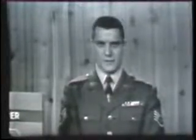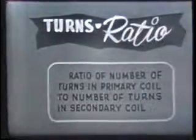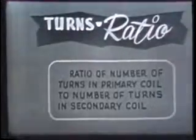The transformer can step a voltage up or it can step it down. The voltage increase or decrease is determined by the turns ratio of the particular transformer. The turns ratio is the ratio of the number of turns in the primary coil to the number of turns in the secondary coil. For example, if the primary coil has 500 turns and the secondary 1,000 turns — twice the number of the primary, or a ratio of 1 to 2 — the ratio is 1 to 2, so the voltage doubles. The voltage is stepped up because the secondary coil is the largest.